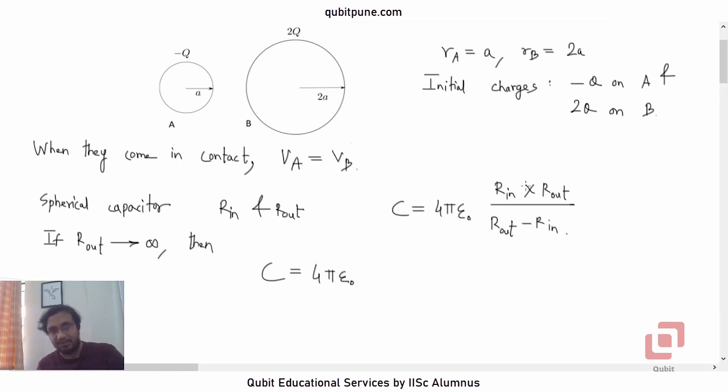First of all, let us divide the numerator and denominator by Rout. So it's a limit problem now. If we divide the numerator and denominator by Rout, then we will get Rin in the numerator and 1 - Rin/Rout. And now we can substitute, find the limit of this as Rout tends to infinity. So the capacitance will be 4π ε₀ Rin / (1 - 0), or just R.